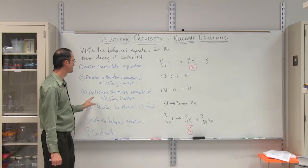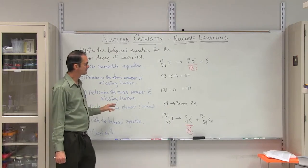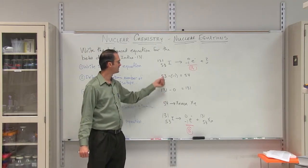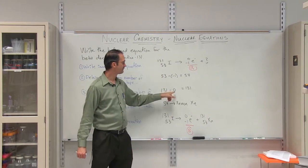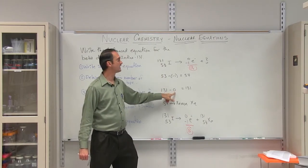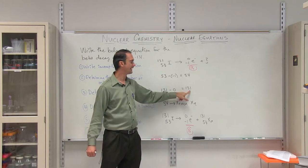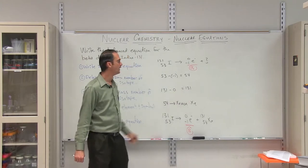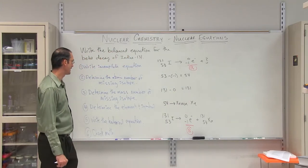The next thing we need is to determine the mass number of the missing isotope. In this case, we have 131 protons and neutrons on the left. We have zero protons and neutrons in the beta particle. So we still maintain 131 protons and neutrons over on the right-hand side.